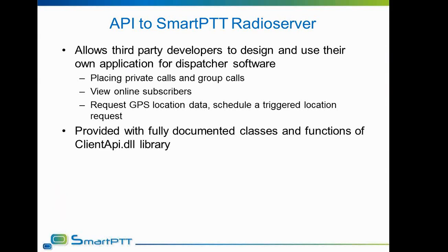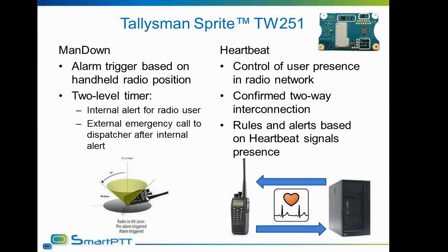Let's proceed with the Talisman option board. SmartPTT now supports the Talisman Sprite TW251 option board. Two features realized in these option boards are implemented in SmartPTT software. The first is Man Down — a control feature that provides the ability to monitor the position of the radio in space. If the radio leans too much, leaving the safety cone, a first timer will start. Upon ending of the first timer, a pre-alarm will start, notifying radio users that the radio is tilted too much.